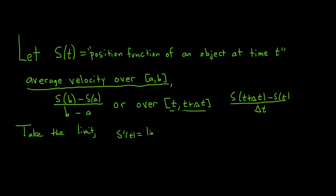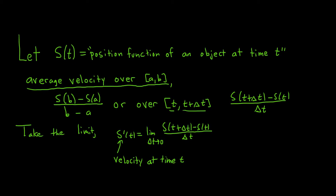So s'(t) is equal to the limit as Δt approaches 0 of [s(t + Δt) minus s(t)] over Δt. The derivative of position is the limit of the average velocity, and this is called the instantaneous velocity — or just the velocity at time t.